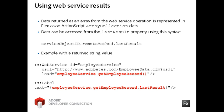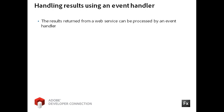If the service operation is named GetEmployeeRecord, then the string is accessed by typing EmployeeService.GetEmployeeRecord.lastResult. As with HTTP service, you can exert more control over the return data if you handle it in a result event rather than simply binding to the LastResult property.